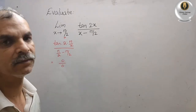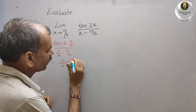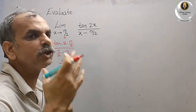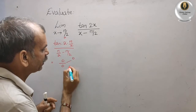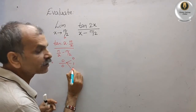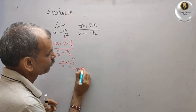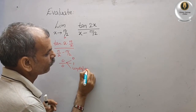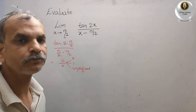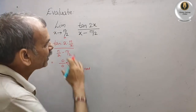We know that 0/0 is an indeterminate form. It has three interpretations — some say it's 0, some say it's 1, and some say it's undefined or not defined.